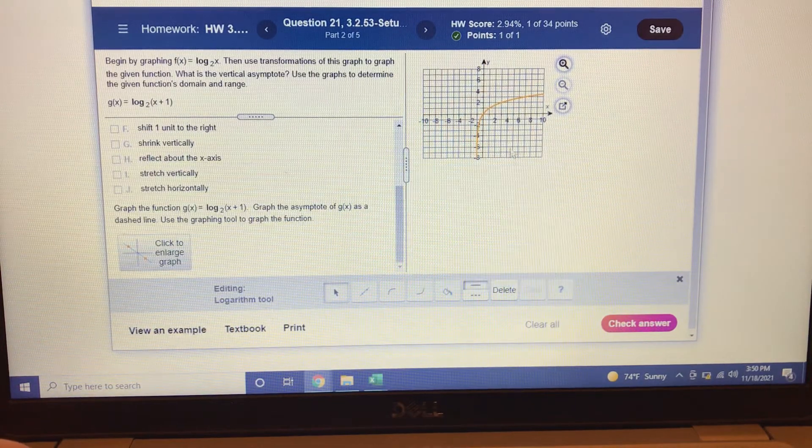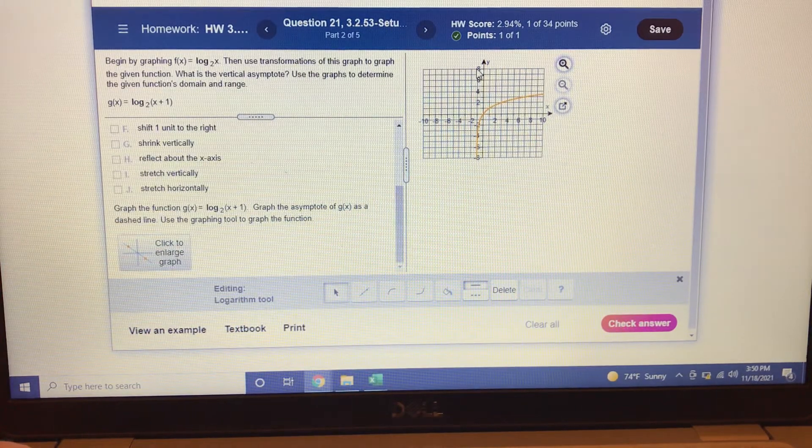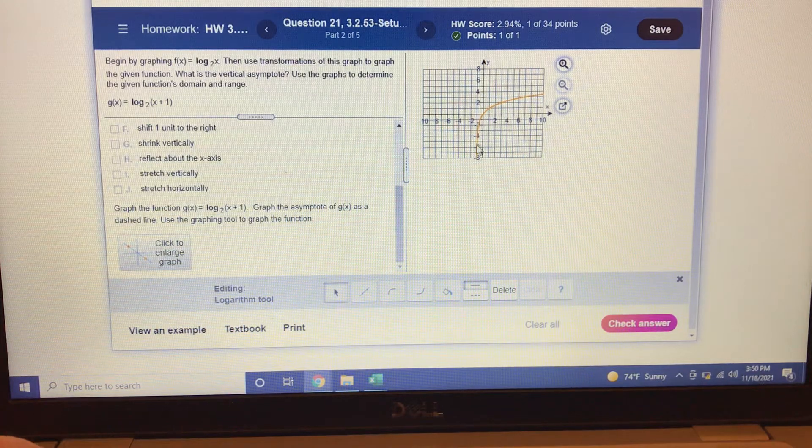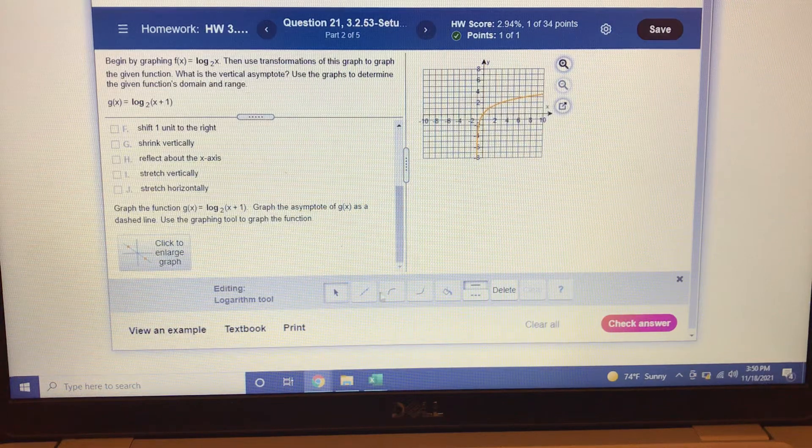Alright, so the logarithm is in there. But it's going to tell me I'm wrong until I graph the asymptote. Now the asymptote is going to be right here. Because this graph gets closer and closer and closer to negative 1, but never actually touches or crosses.